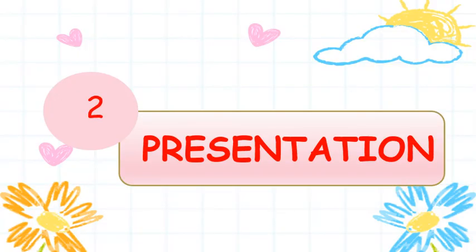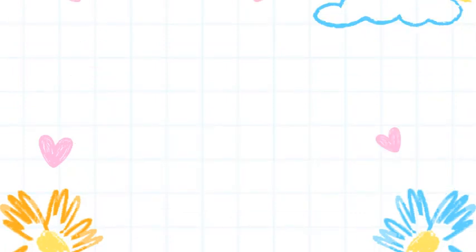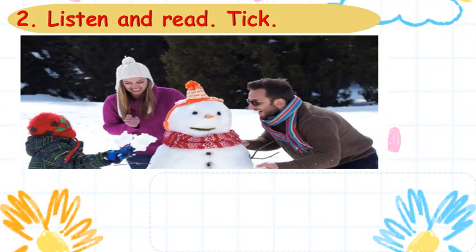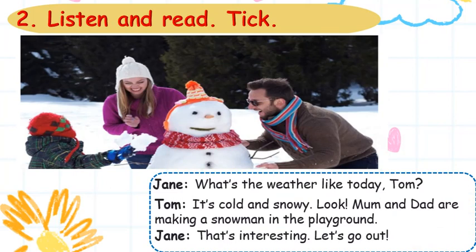Let's go on with the next part — Part 2: Presentation. Listen to the dialogue between James and Tom to know what they are talking about. What's the weather like today, Tom? It's cold and snowy. Look! Mom and Dad are making a snowman in the playground. That's interesting. Let's go out.